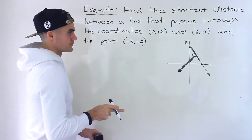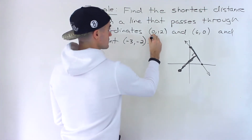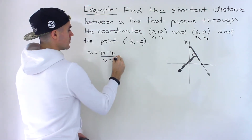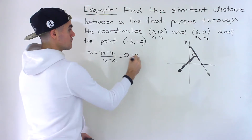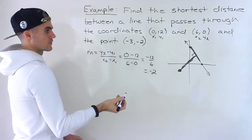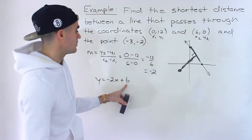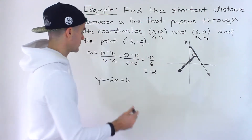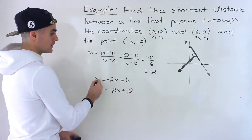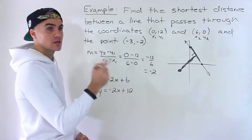First we want to find the equation of this line, so let's find the slope. We have x1, y1 = (0, 12) and x2, y2 = (6, 0). Slope = (y2 - y1) / (x2 - x1) = (0 - 12) / (6 - 0) = -12/6 = -2.